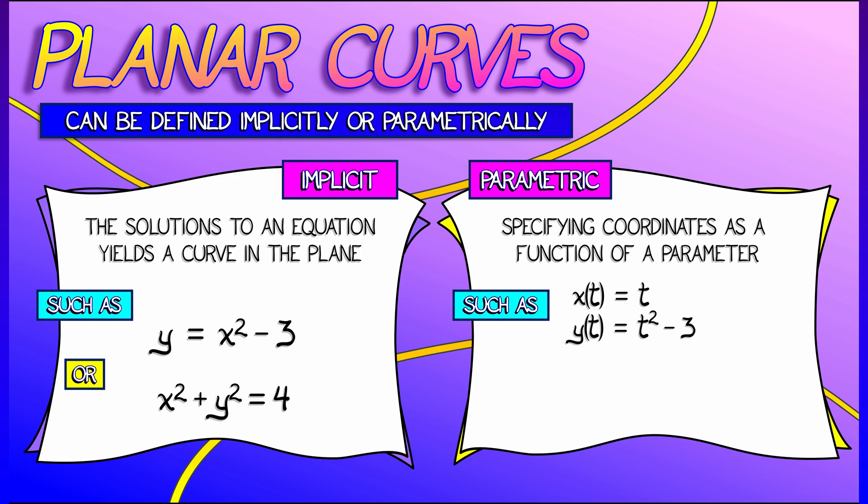Then you think about that parameter as something like time, and you're tracing out the curve given the x and y coordinates. Now, these parameterizations you see on the right are giving you exactly the same curves as you see on the left. They're just formulated in a different manner.